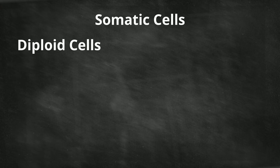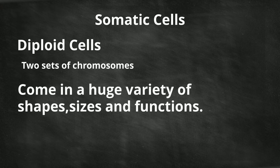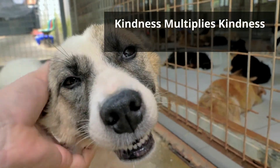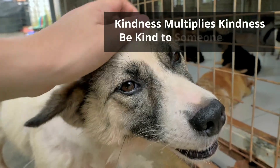In summary, somatic cells are diploid cells, which means they have two sets of chromosomes, one inherited from each parent. And they come in a huge variety of shapes, sizes, and functions found throughout the body. Thanks for watching, and remember, kindness multiplies kindness — be kind to someone today.